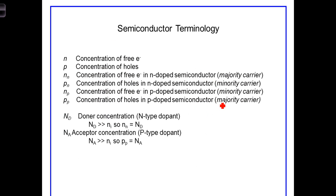One of the most challenging parts of this part of the class is just keeping the terminology and variable names straight. Here's a brief list of the most important terms thus far. Lowercase n represents the concentration of free electrons. Lowercase p represents the concentration of holes. N sub n represents the concentration of free electrons in an N-doped semiconductor. Under these circumstances, the free electrons in the N-doped are referred to as a majority carrier.